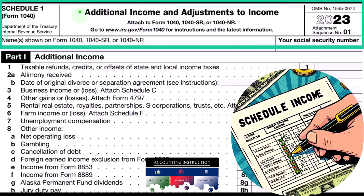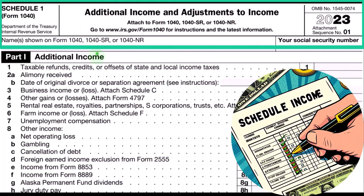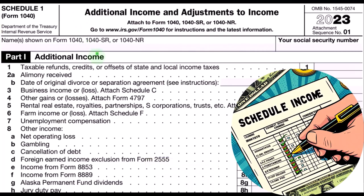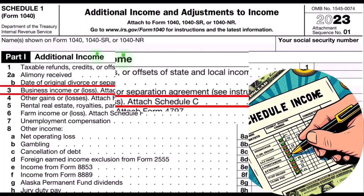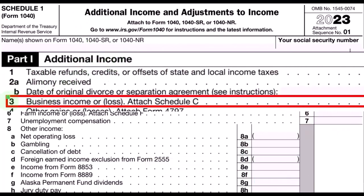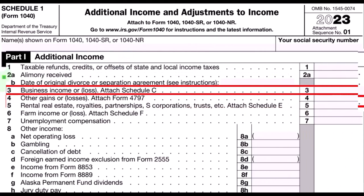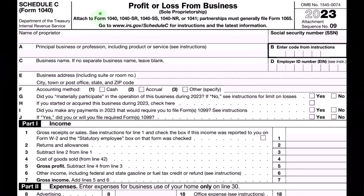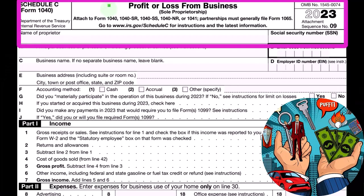This is the Schedule 1 — additional income and adjustments to income. Part one covers additional income, with the Schedule C rolling into line three, business income or loss. This is the Schedule C: profit or loss from business, which has an income statement format of income minus expenses.